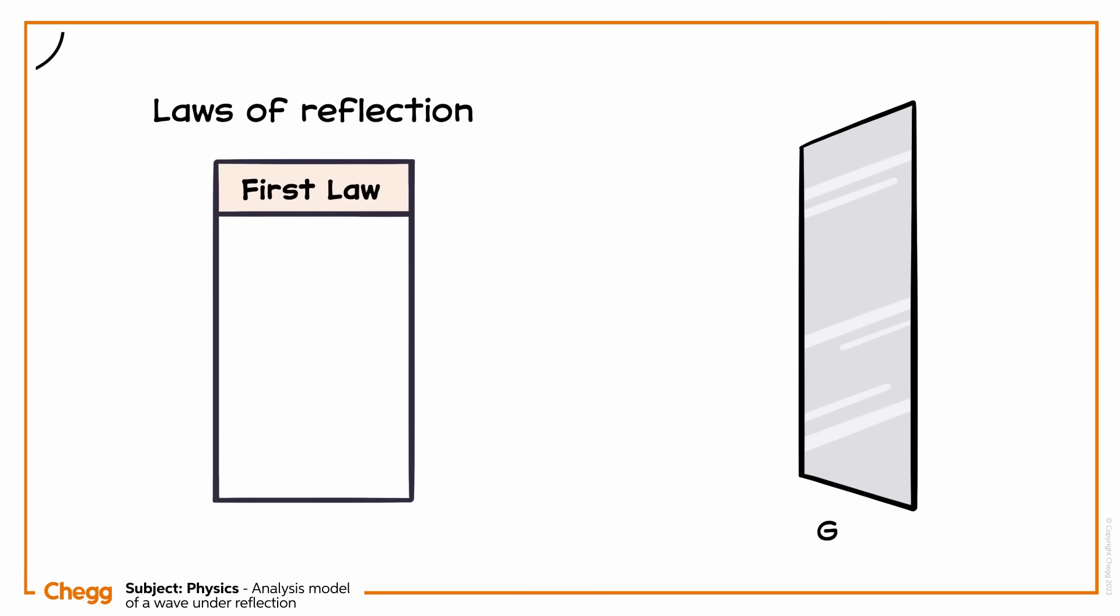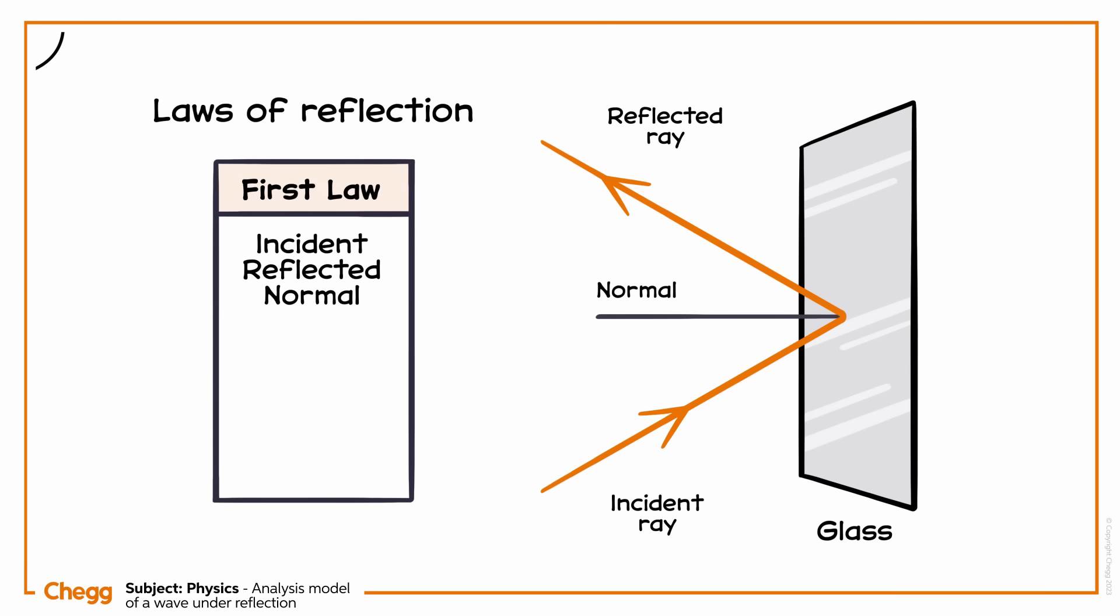The first law of reflection states that the incident ray, the reflected ray, and the normal to the interface must be in the same medium. In this case, all these are present in the air medium.